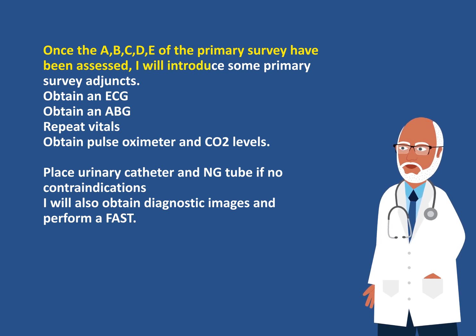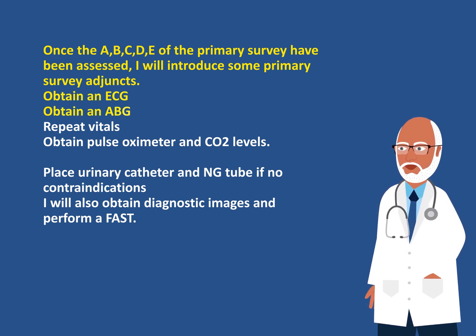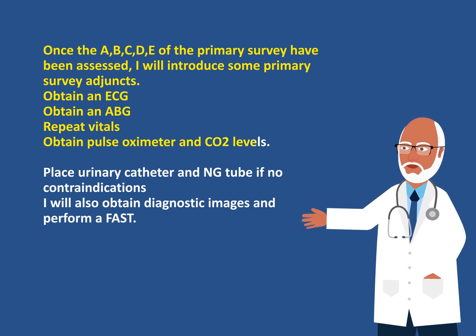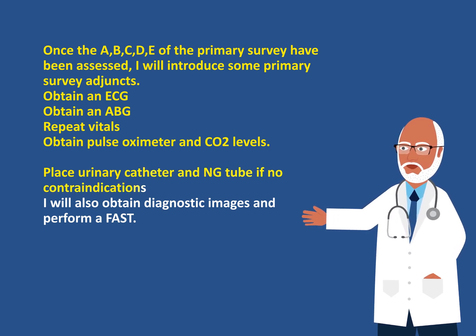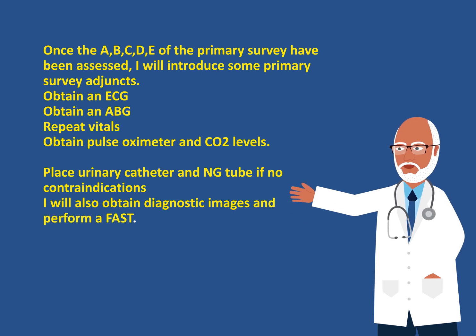Once the A, B, C, D, E of the primary survey has been assessed, I will introduce some primary survey adjuncts. Namely, obtain an EKG, obtain an ABG, repeat the vitals, and obtain the pulse oximeter and the CO2 level. Place a urinary catheter and NG tube in the patient if no contraindications are present. I will also obtain diagnostic imaging and perform a FAST.